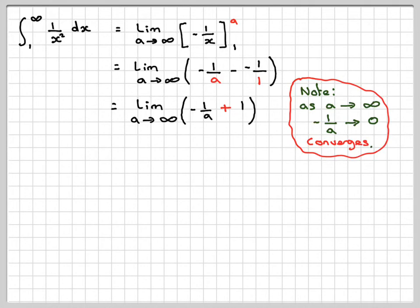The problem is they don't always converge, as you'll see in the next video. So this becomes the limit as a goes to infinity of 1, which is equal to 1. So the required area was actually equal to 1.